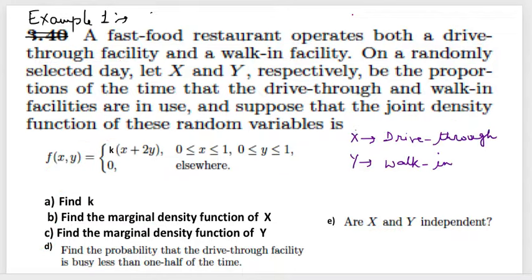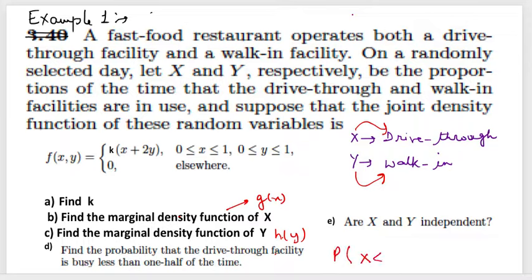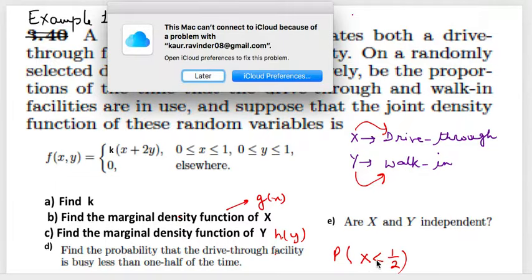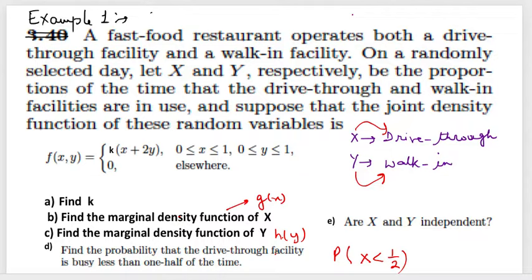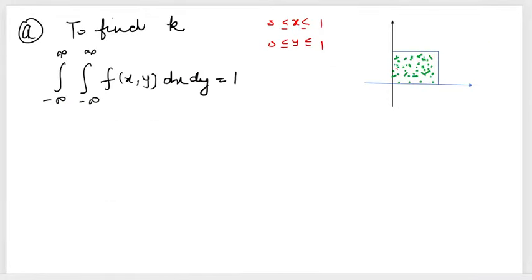For this problem, x is the drive-thru time proportion and y is the walk-in facility time proportion. We need to find g(x), the marginal density function for x, h(y) the marginal density function for y, and the probability that the drive-thru facility is busy less than one half of the time — meaning we want to find P(x < 1/2).